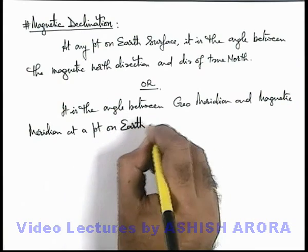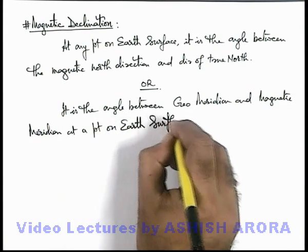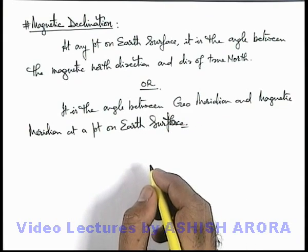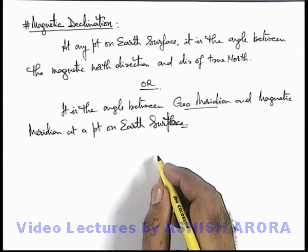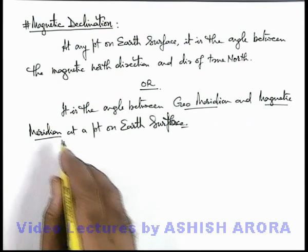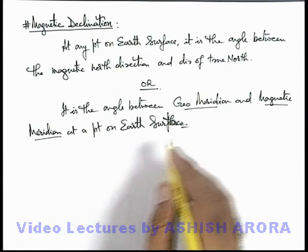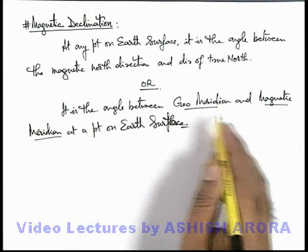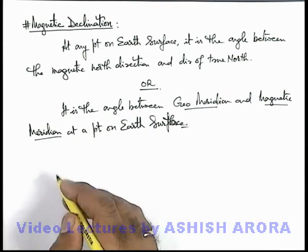If you look at both of these definitions, they are almost similar, because at any point the geographic meridian is the plane which contains the direction of true north, and the magnetic meridian is the plane which contains the direction of magnetic north. So the angle between geographic and magnetic meridian at a point can be termed as magnetic declination.